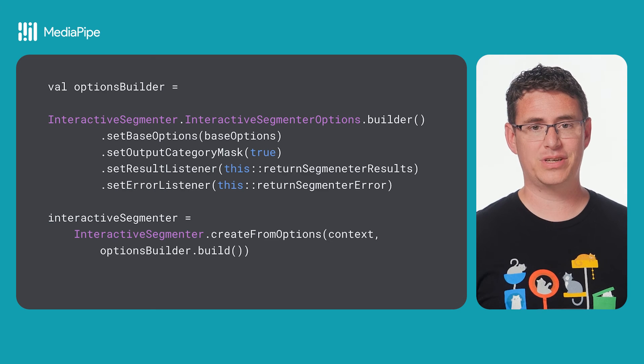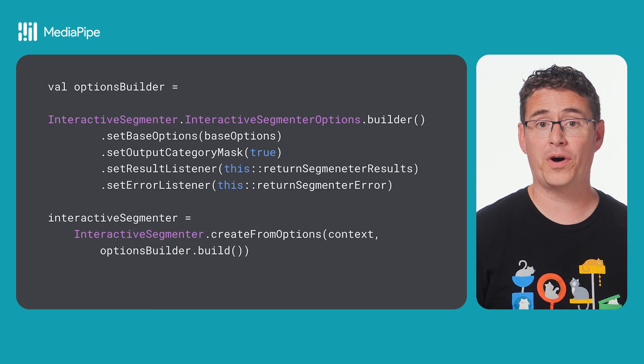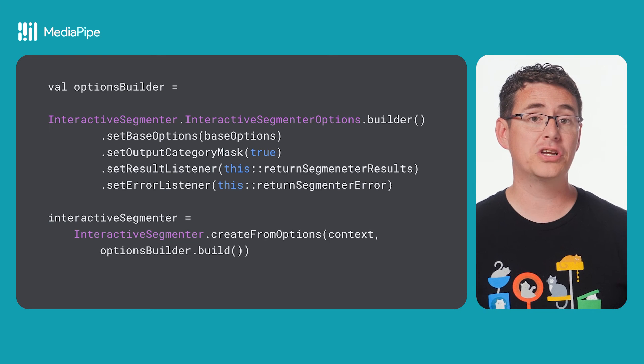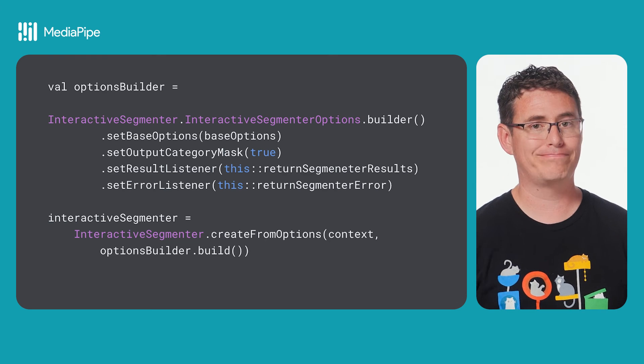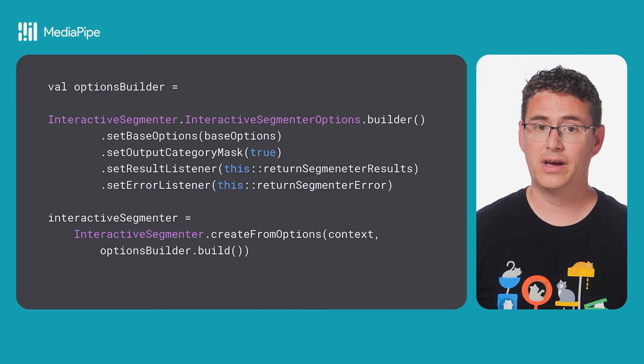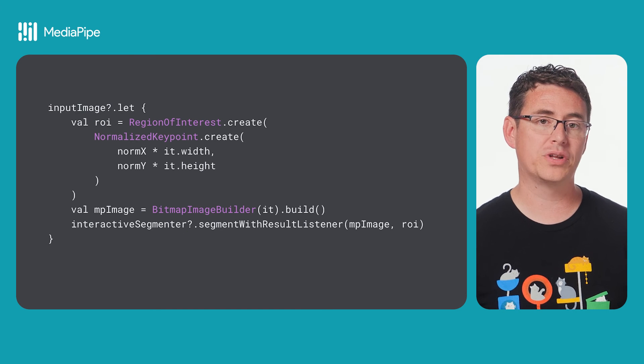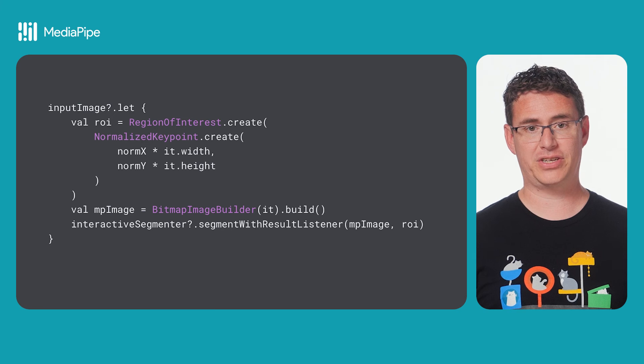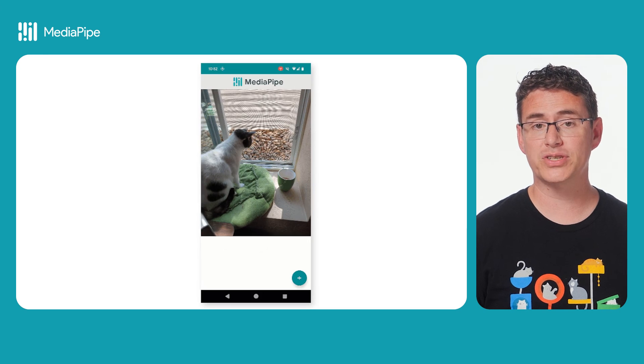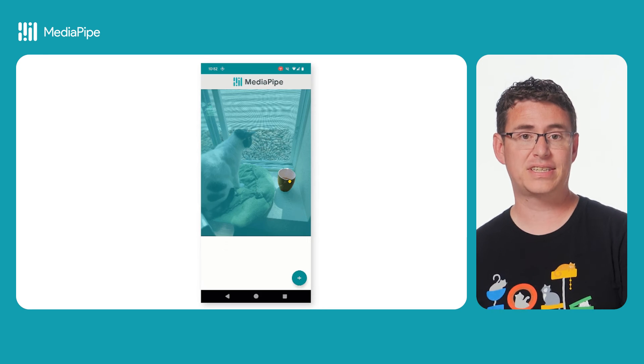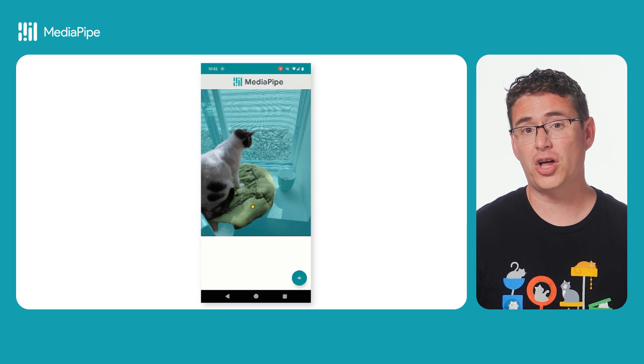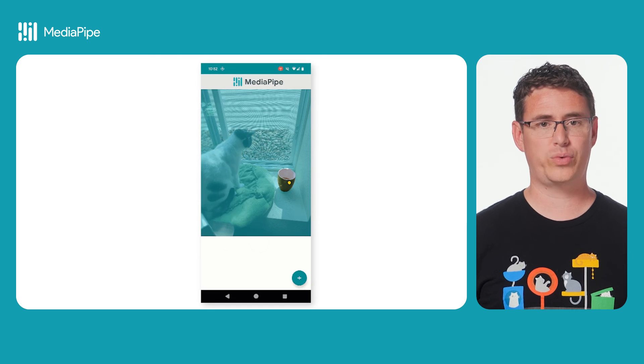When it's time to do the actual segmentation, you will take a bitmap that you want to segment, then create a region of interest based on the point, or points, that you're interested in, then call segment with result listener from your interactive segmenter. Finally, you can use that result in your app, which in this example case is just applying a color overlay to everything that isn't that region of interest.